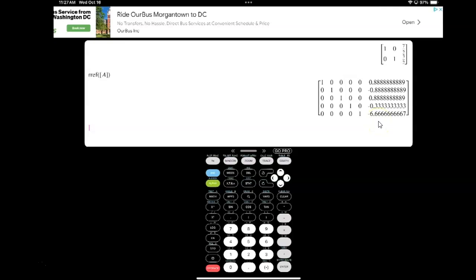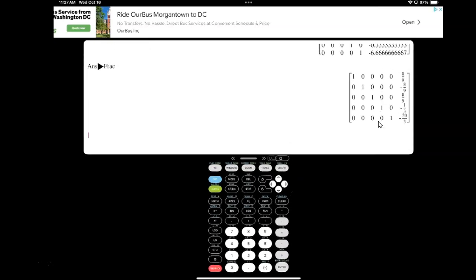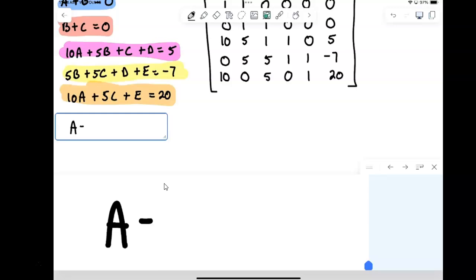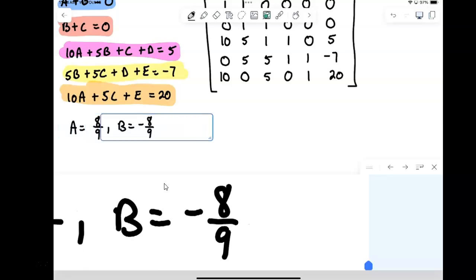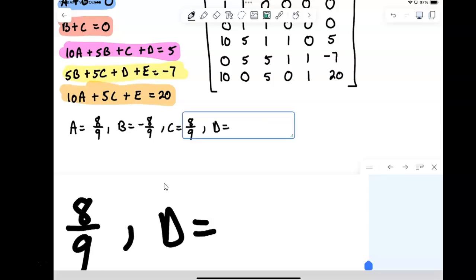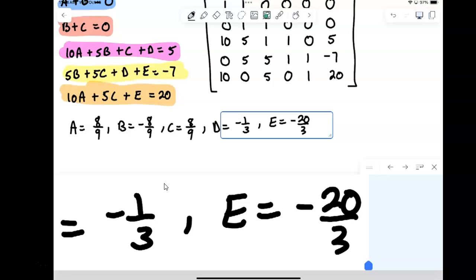And that gives me these answers here. But they're kind of ugly. So I'm going to convert those to fractions. So I do math fraction. That takes my answer and turns it into fractions. Now those might be a little small on your screen. We have 8 9ths, looks like negative 8 9ths, 8 9ths, and then negative 1 3rd and negative 20 3rds. So those are our solutions. So let's put those back into our problem now. So we find out that A equals 8 9ths, B equals negative 8 9ths, C equals 8 9ths. All right. Now that we know what our variables are, we want to write out our solution.